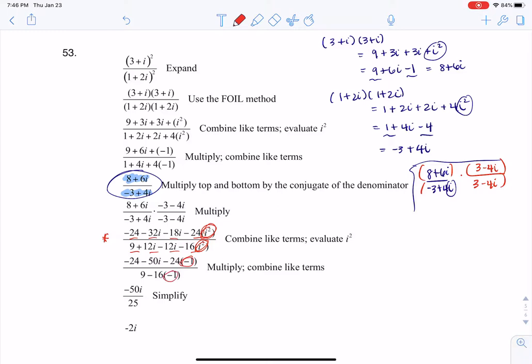So if I wanted like a little intermediate step right here, this would have been negative 24 minus 50i plus 24 on the numerator, and this would have been 9 plus 16 on the denominator. These 24s are gonna cancel. That gets me to negative 50i over 25. And negative 50 over 25 leaves a 2. And that's why you see my answer is negative 2i.